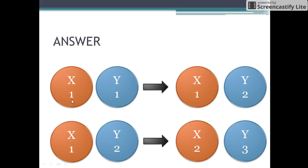Initially there was one x type of star and one y type of star. According to the theory, when these two stars collide they form one plus one, that is two new y type of stars. The one y type of star gets converted to one x type of star, and the one x type of star originally present in the collision gets eliminated.